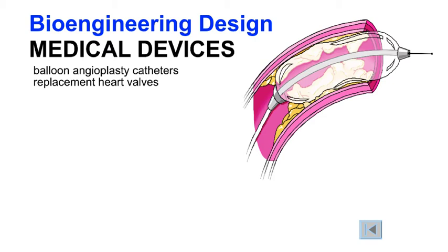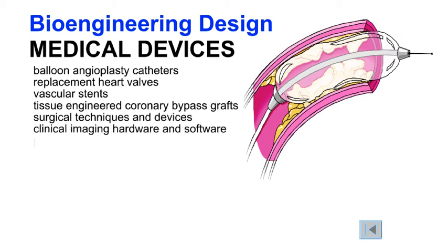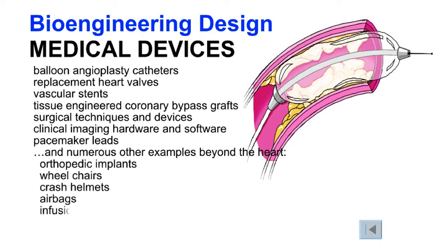There are many other devices involving biomechanical design used in the heart and cardiovascular system, such as replacement heart valves, vascular stents, tissue-engineered coronary bypass grafts, surgical techniques and devices, clinical imaging hardware and software, pacemaker leads, and numerous other examples including those beyond the heart such as orthopedic implants, wheelchairs, crash helmets, airbags, infusion pumps, athletic shoes, and many more. We will see many examples of biomechanics in bioengineering design during this quarter.